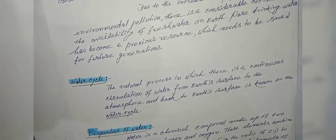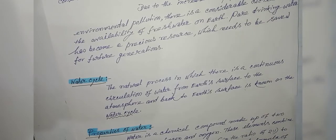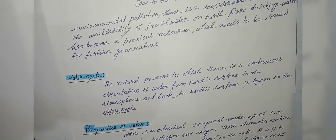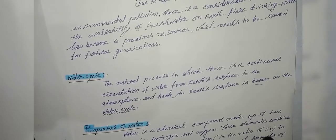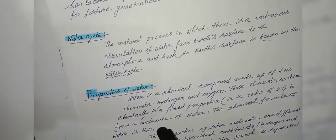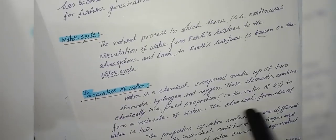Properties of water. Water is a chemical compound made up of two elements: hydrogen and oxygen. These elements combine chemically in a fixed proportion in the ratio 2:1 to form a molecule of water. The chemical formula of water is H2O.